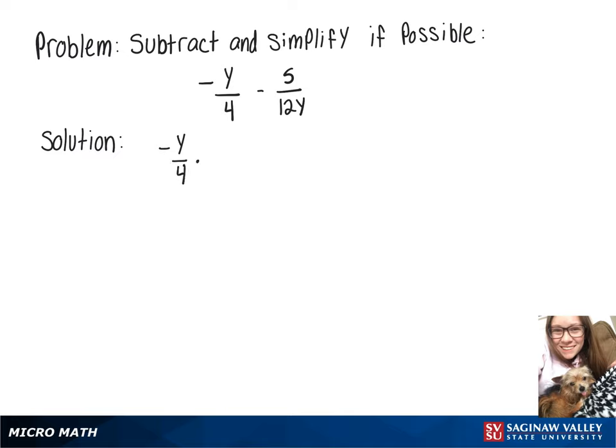To give us a common denominator, we're going to take our first fraction and multiply it by 12y over 12y. So now we have negative 12y squared over 48y.